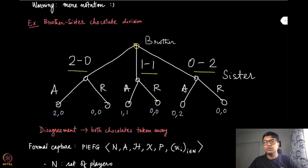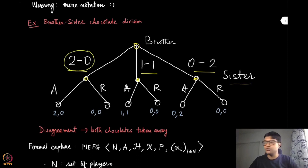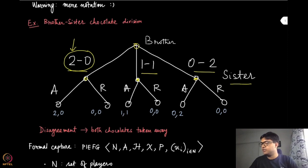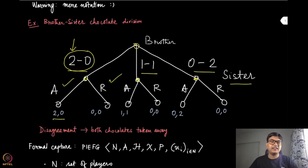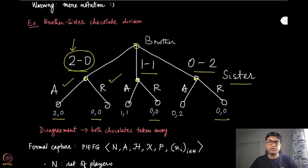We are going to represent this as an extensive form game. We can draw a game tree: at the first node the brother is the player, and at all subsequent intermediate nodes the sister is the player. The action two-zero means the brother has kept two for himself and zero for the sister; one-one means it is equally divided; zero-two is evident. The sister at each of these stages can either accept or reject. If she accepts, the corresponding division is the final utility for both players. If she rejects, in all cases both get zero because the chocolates are taken away.